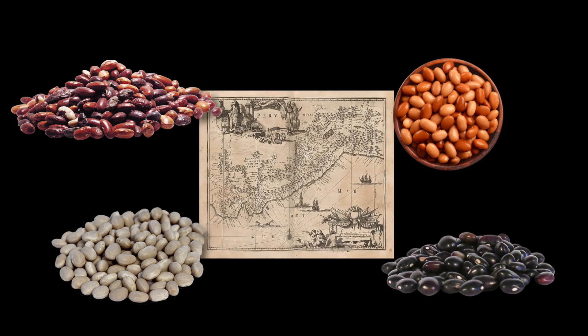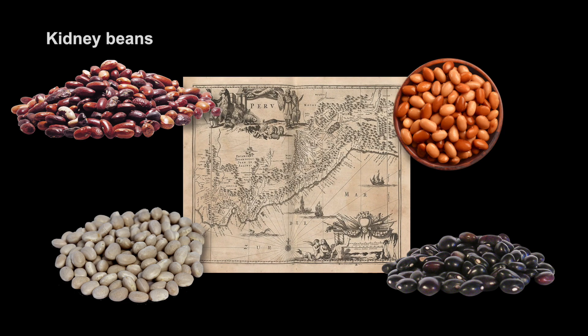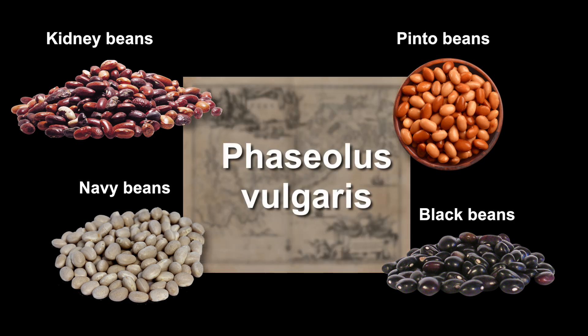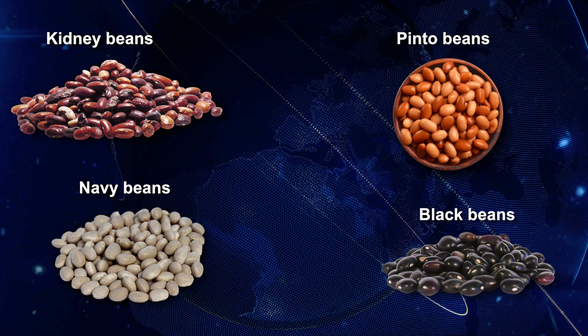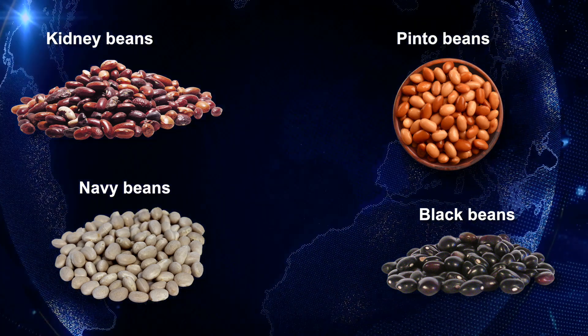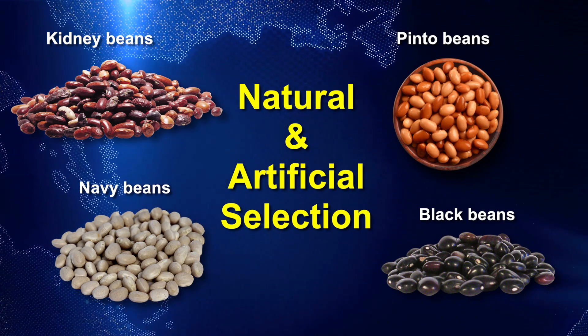Were you able to represent and model the significance of variation in a population for biological evolution? We looked at variation within a population of beans, and as Darwin put it, variation is essential for evolution. Let's take a look at some pictures of beans that show how different species have evolved from a common ancestor in Peru. Kidney beans and others such as pinto beans, navy beans, and black beans are known scientifically as Fasciolis vulgaris. Although they originated in Peru, they are now planted and consumed all over the planet. The different geographical regions have provided environmental — in other words natural — selection, as well as the artificial selection done by humans.